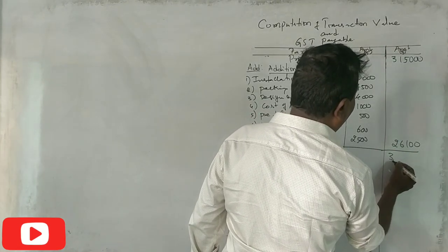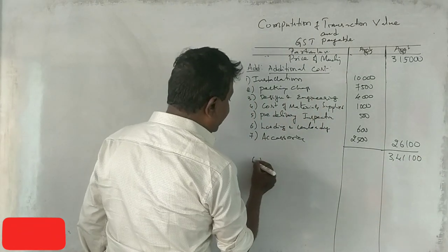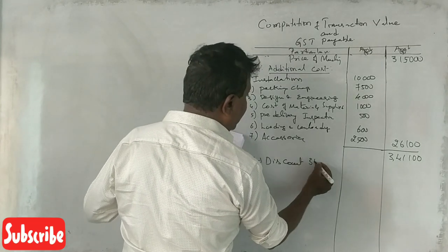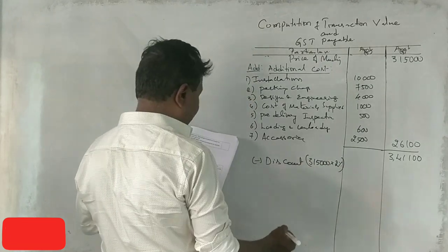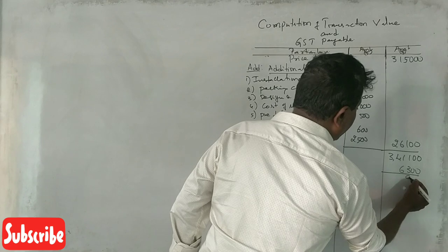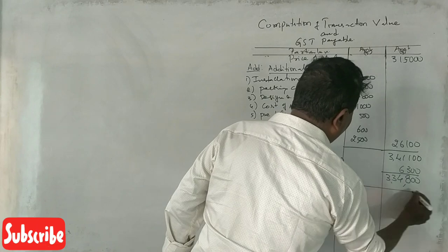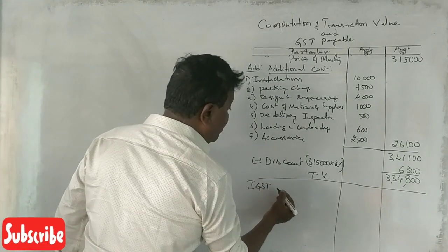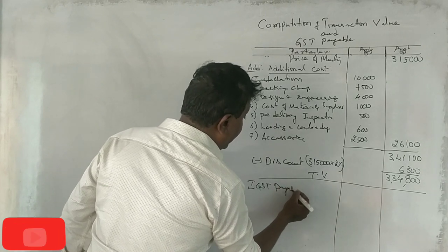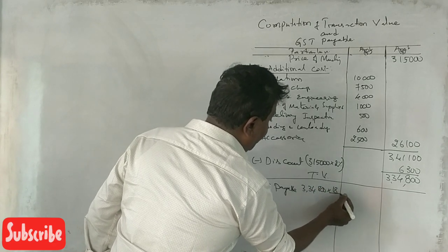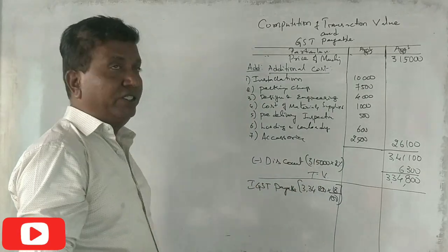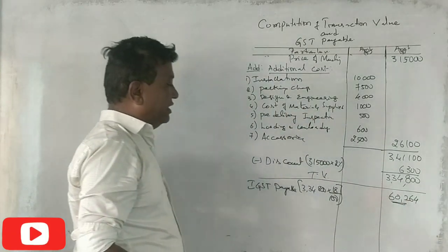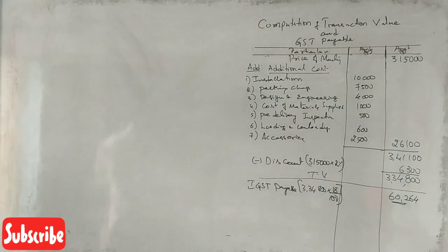Total amount is Rs. 3,41,100. Now, what is the discount? The machinery price is Rs. 3,15,000, and the cash discount is 2%, which equals Rs. 6,300. So the transaction value is Rs. 3,34,800. IGST is payable on Rs. 3,34,800 at 18%. Accessories and machinery are both taxed under IGST. This IGST amount is what we have to pay to the government.